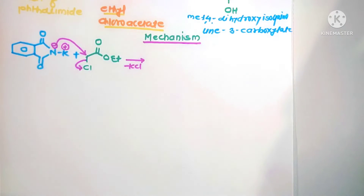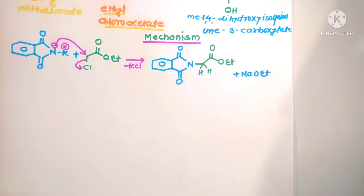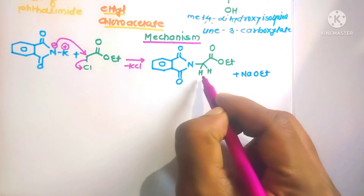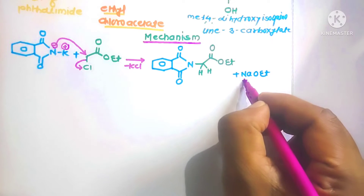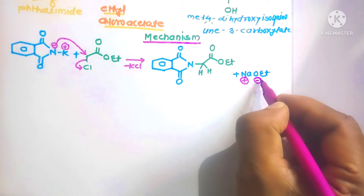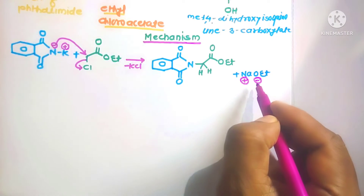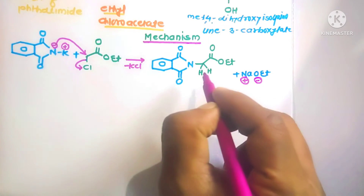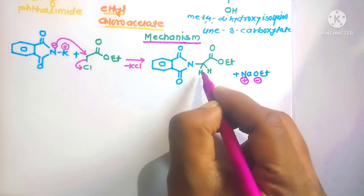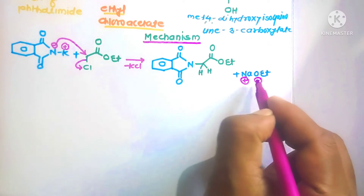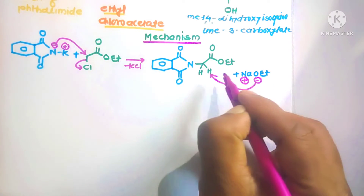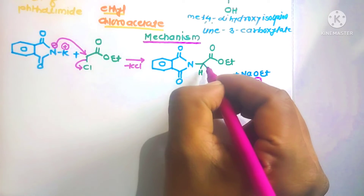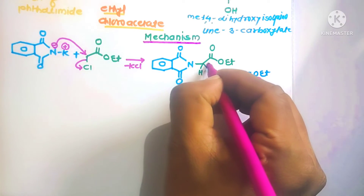This molecule is then reacted in the presence of sodium ethoxide. Here OEt⁻ acts as a strong base and abstracts the more acidic protons from the active methylene groups. The base abstracts this highly acidic proton, and then the bonding electrons shift toward the carbon atom.